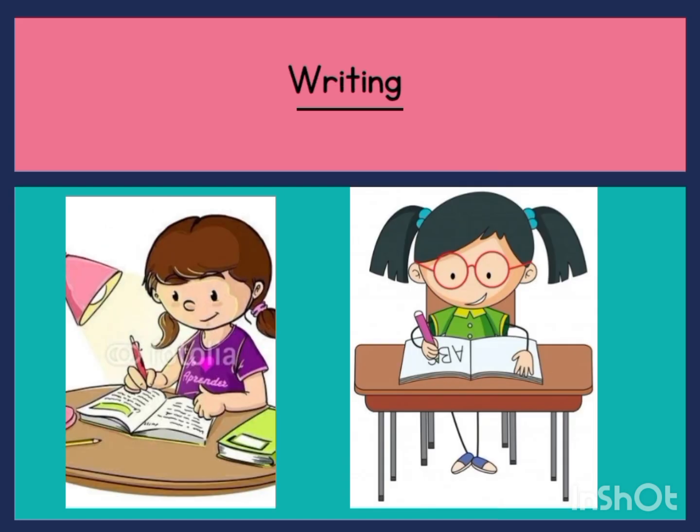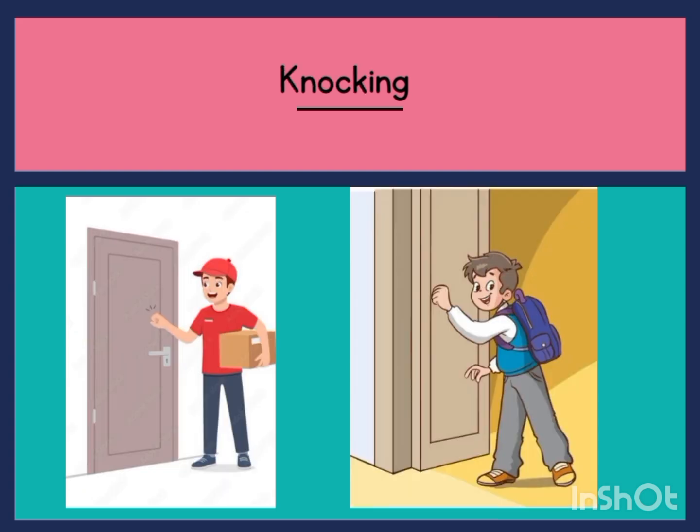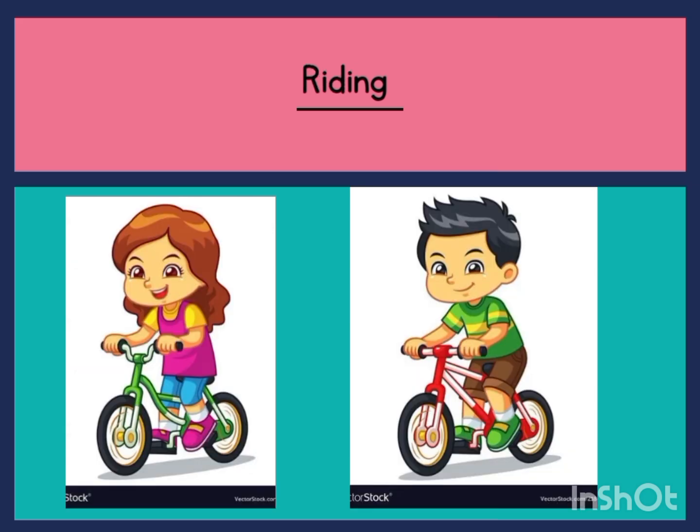Riding — they are riding. Both are riding, they are performing an action. What are they doing? They are riding. The action is riding. Riding is an action word. Knocking — they are performing an action here. Knocking is an action word.